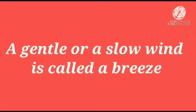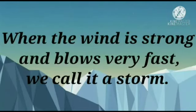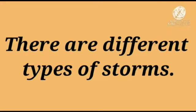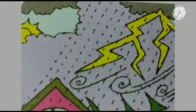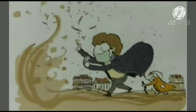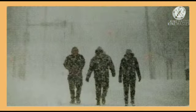When the wind is very strong and blows very fast, we call it a storm. Storms can cause damage to trees and houses. There are different types of storms. Some storms bring heavy rain, lightning, and thunder — they are called thunderstorms. Some storms carry dust with them — these are called dust storms. Storms that carry sand are called sandstorms. Storms which bring snowfall are called snowstorms.